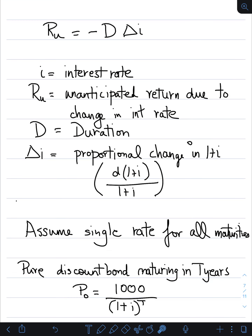This formula guides how we can find the unexpected return due to changes in the interest rate. R_u, which is our unanticipated return due to changes in the interest rate, is equal to the negative duration times delta-i. Delta-i, where i is the interest rate, represents the proportional change in one plus i.